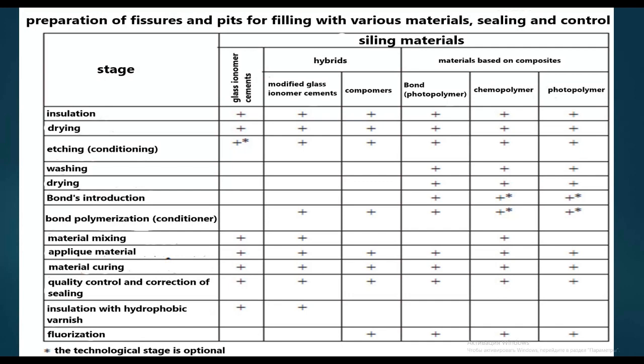For photopolymer: insulation, drying, etching, varnish drying, bond introduction and bond polymerization, fluoridation, material application — without mixing — material curing, quality control and correction of sealing, insulation with hydrophobic varnish, and fluoridation.